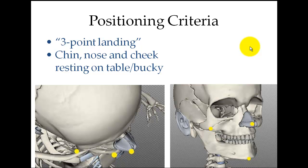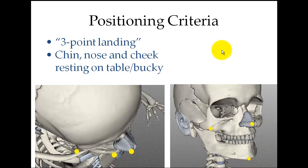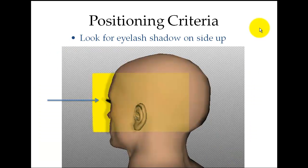Here's one of our tips: the three-point landing. If you get the chin, nose, and cheek all resting against the bucky or the table, you're going to have a pretty good setup for that 53-degree angle. The only difference is sometimes people have a different shaped head or a longer nose. If you're laying them supine, think of laying a sheet of paper across the chin, nose, and cheek and stoop down to see if that plane is parallel to your image receptor.